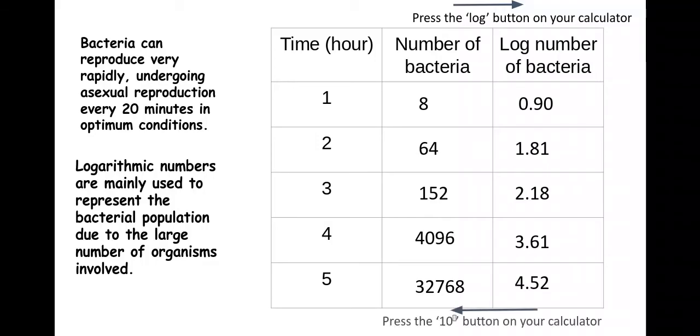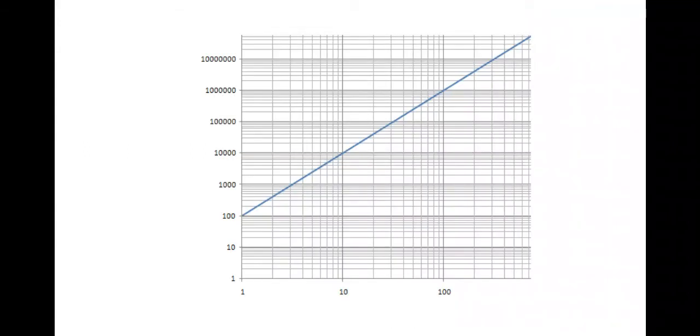In order to do that, what you need to locate on your calculator is this number, the 10 with a little box on the top. That is what you're looking for on your calculator to get back to your bacterial numbers. In your exam you also might be asked to identify things from a log graph, but I've rarely seen this.